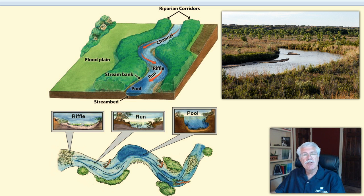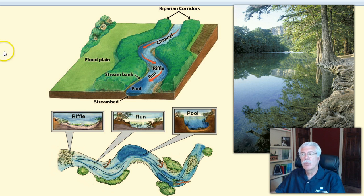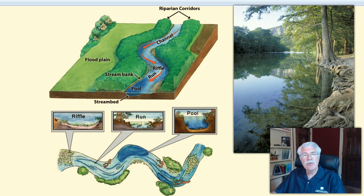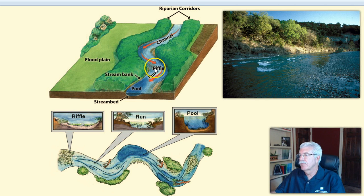Areas where the stream flow slows and water depth increases are called pools. Shallower, faster flowing stream areas are called riffles. These areas can usually be identified by looking for small waves seen on the surface.